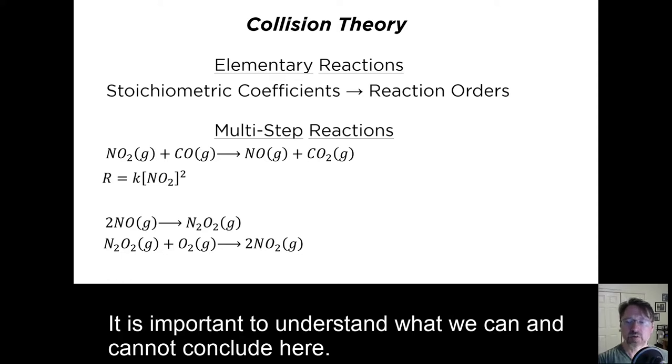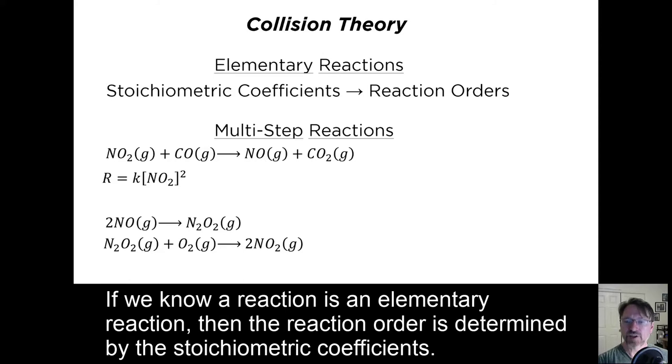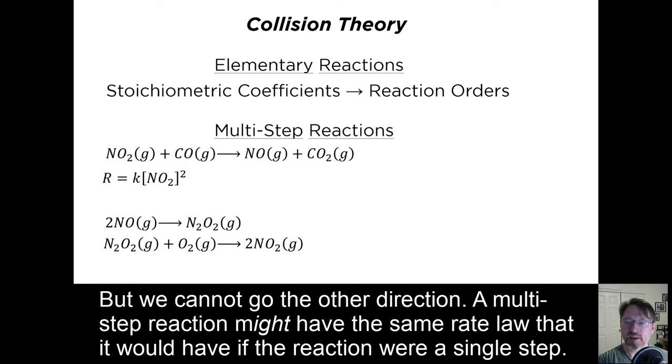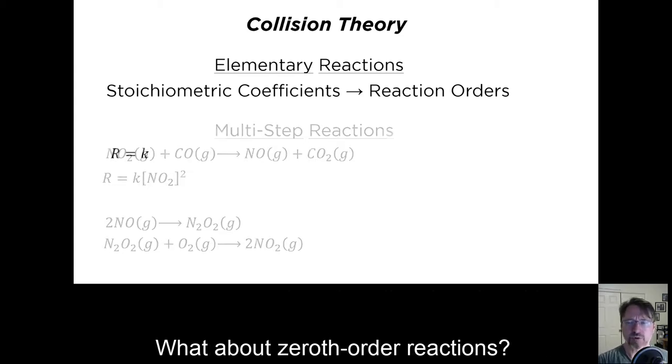It is important to understand what we can and cannot conclude here. If we know a reaction is an elementary reaction, then the reaction order is determined by the stoichiometric coefficients. If we experimentally see that the reaction order is different from the stoichiometric coefficients, then we know the reaction is multi-step. But we cannot go the other direction. A multi-step reaction might have the same rate law that it would have if the reaction were a single step.